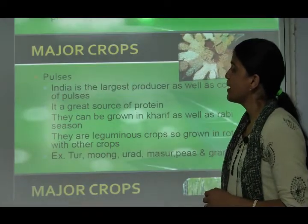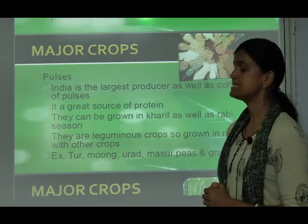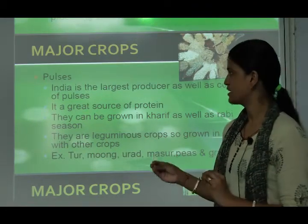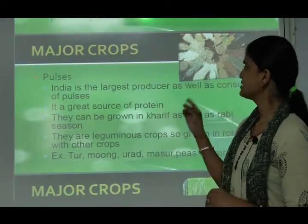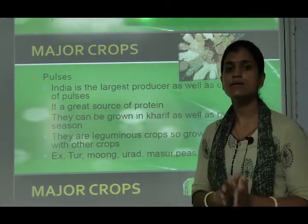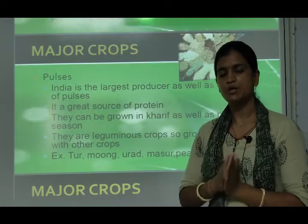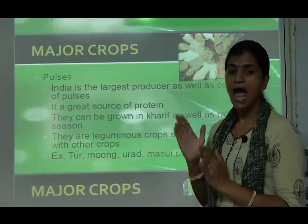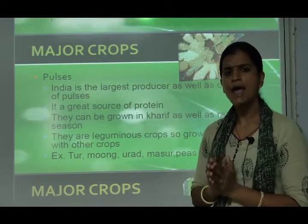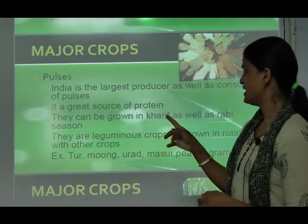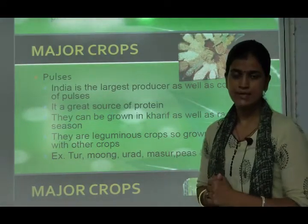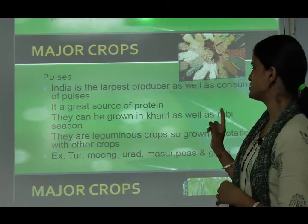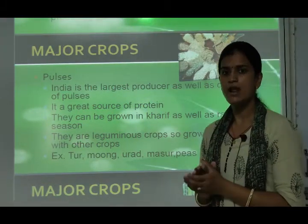Now we come to pulses. Pulses include urad, moong, toor, and others. India is the largest producer as well as consumer of pulses. They are a great source of protein and have high nutritional value. They can be grown in both kharif and rabi seasons.